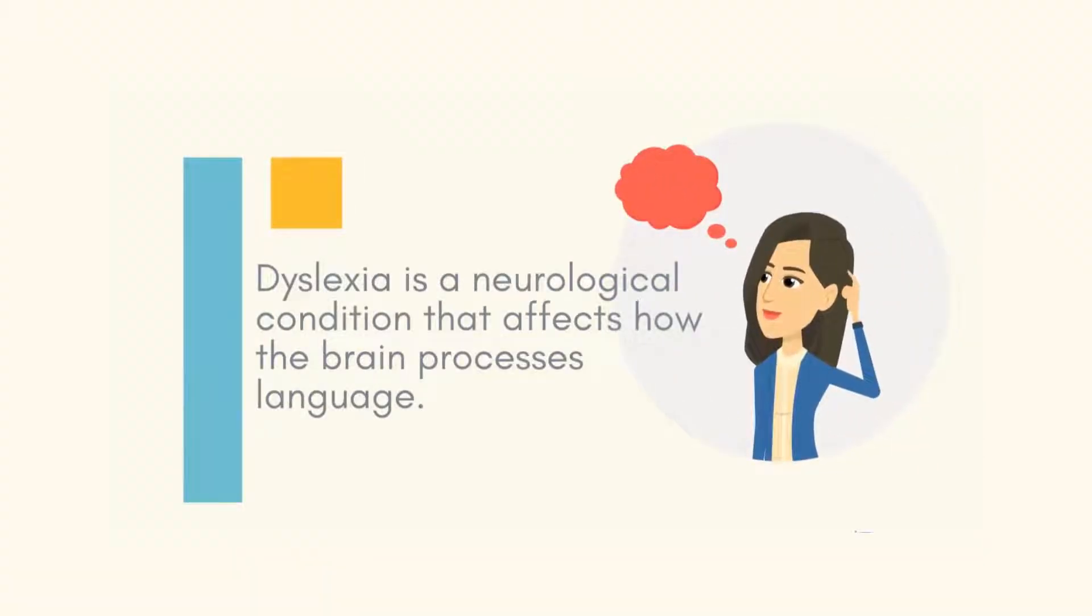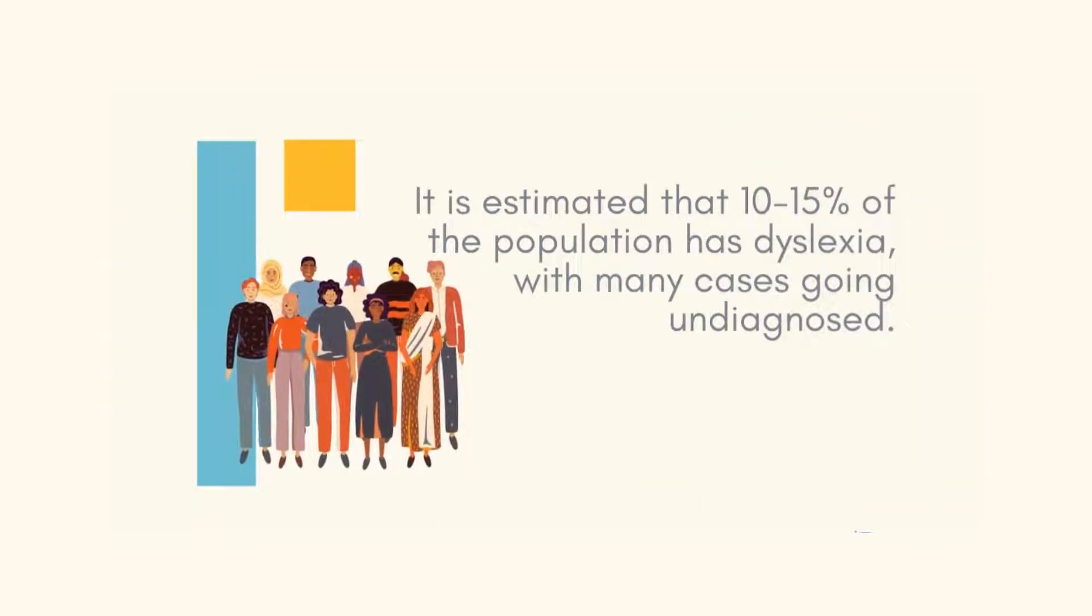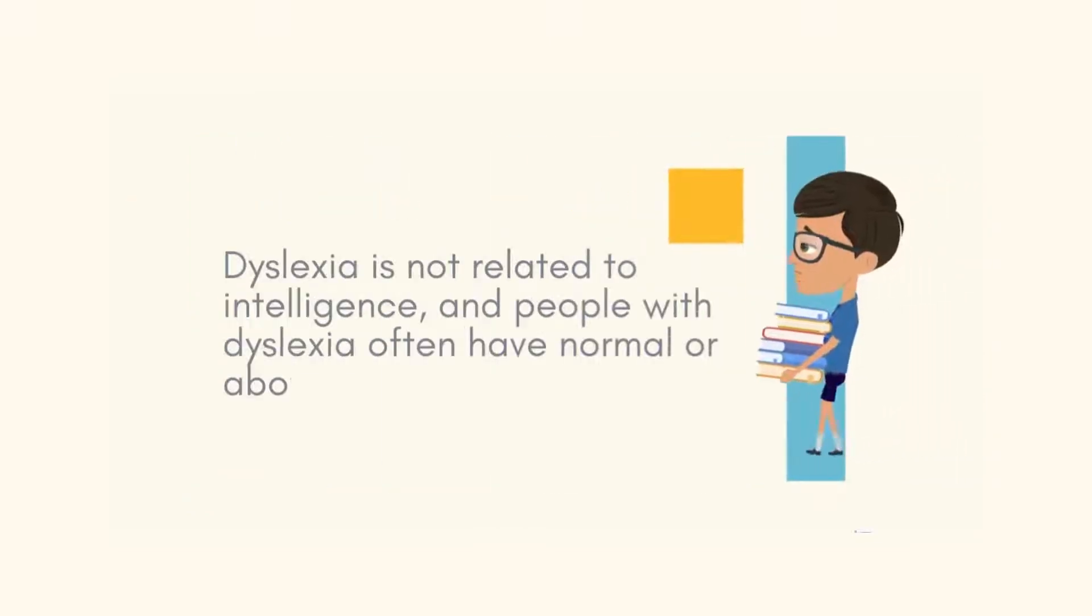Dyslexia is a neurological condition that affects how the brain processes language. It is estimated that 10 to 15% of the population has dyslexia, with many cases going undiagnosed. Dyslexia is not related to intelligence, and people with dyslexia often have normal or above average intelligence.